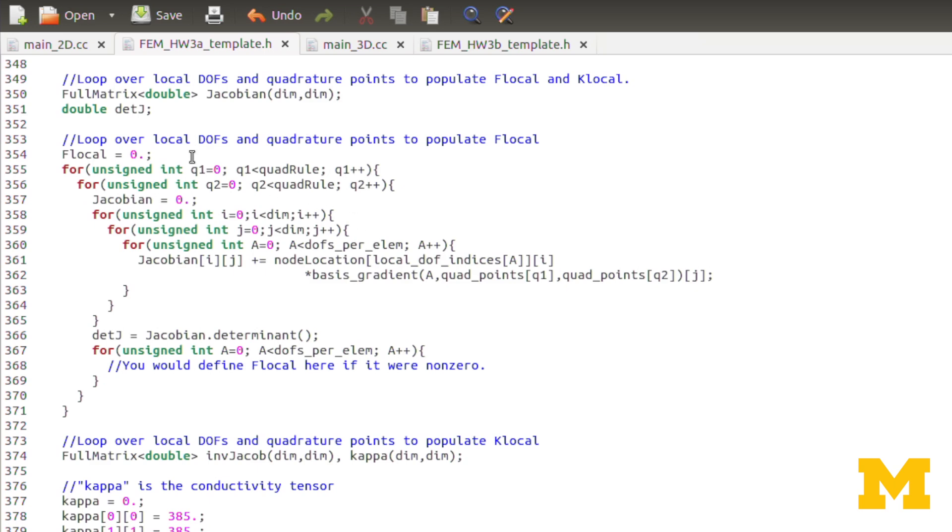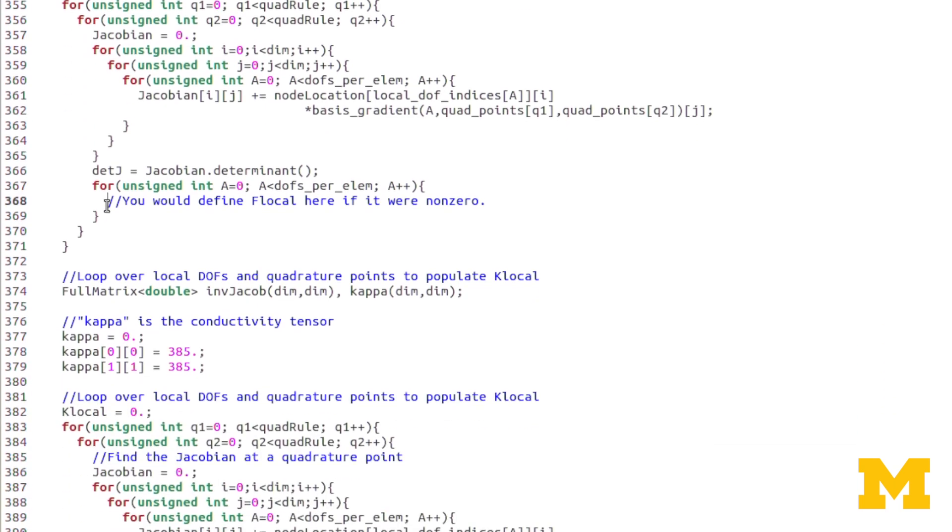Now, I actually, so in this first part, I had the same structure for defining F local. Again, we don't have Neumann boundary conditions, or at least we don't have non-zero Neumann boundary conditions, and we don't have any forcing function. So F local is actually zero for this problem. However, I've left this structure there in case you wanted to include a forcing function. So it's there for you if you'd like. Again, all the structures there, you would still have to define what F local, what the ath component of F local was, just as you did in the 1D problem.